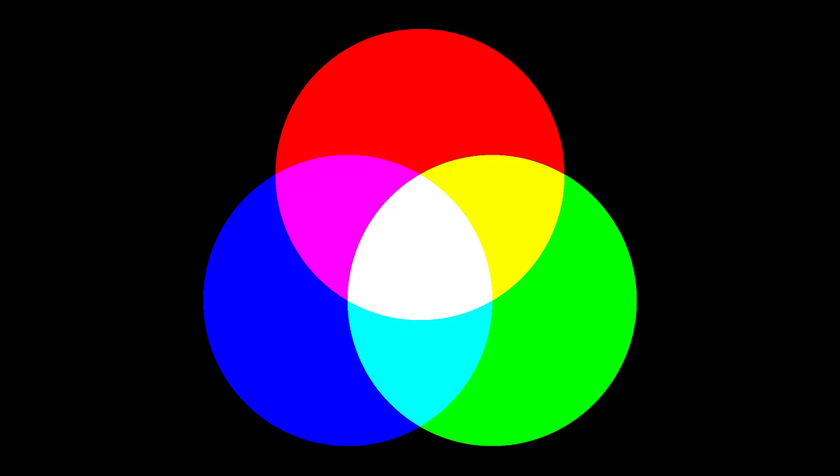However, this is only true if you're using light to mix color. If you were to take the primary colors and mix different combinations together, you'd create colors of cyan, magenta, and yellow, known as secondary colors.